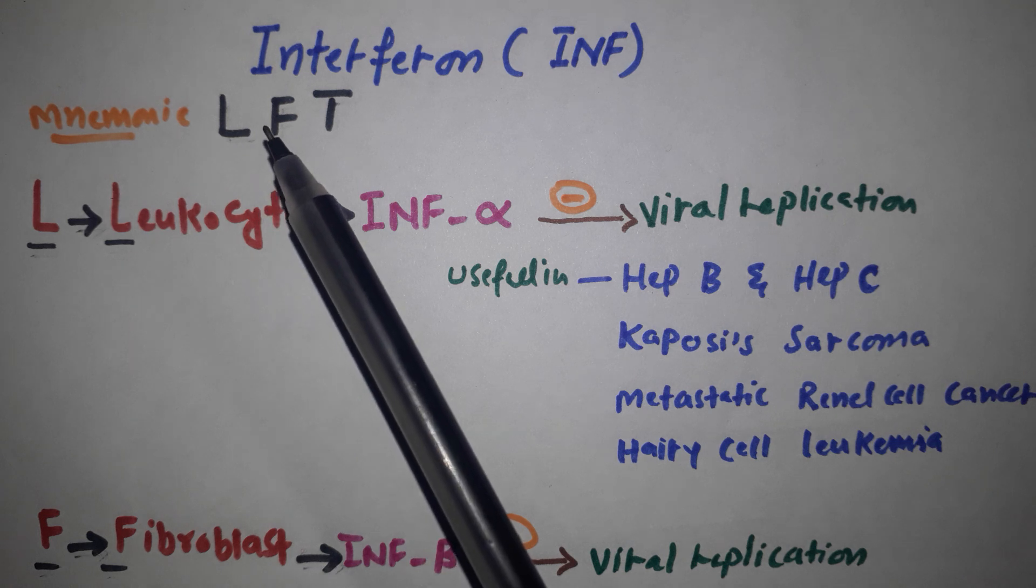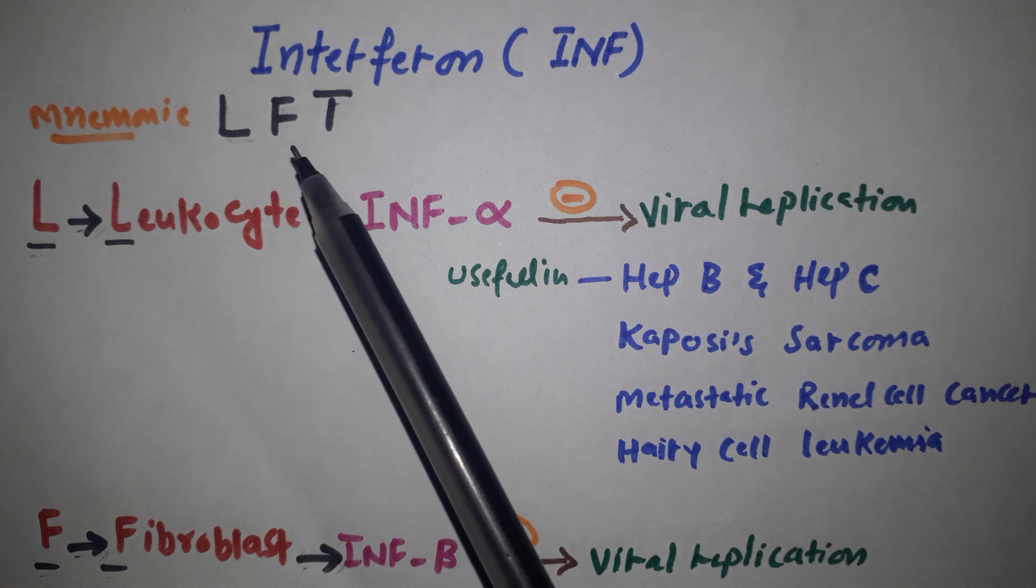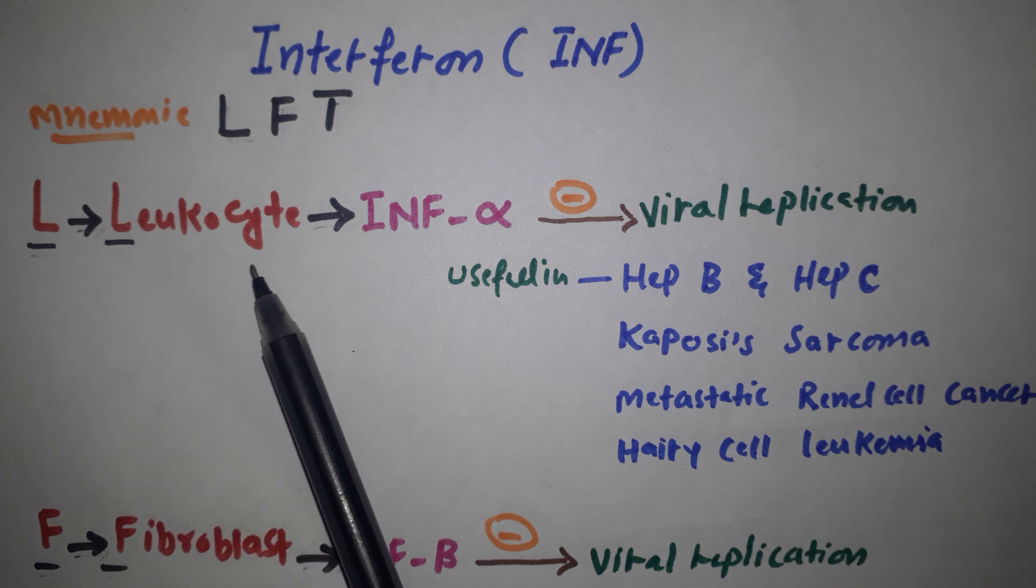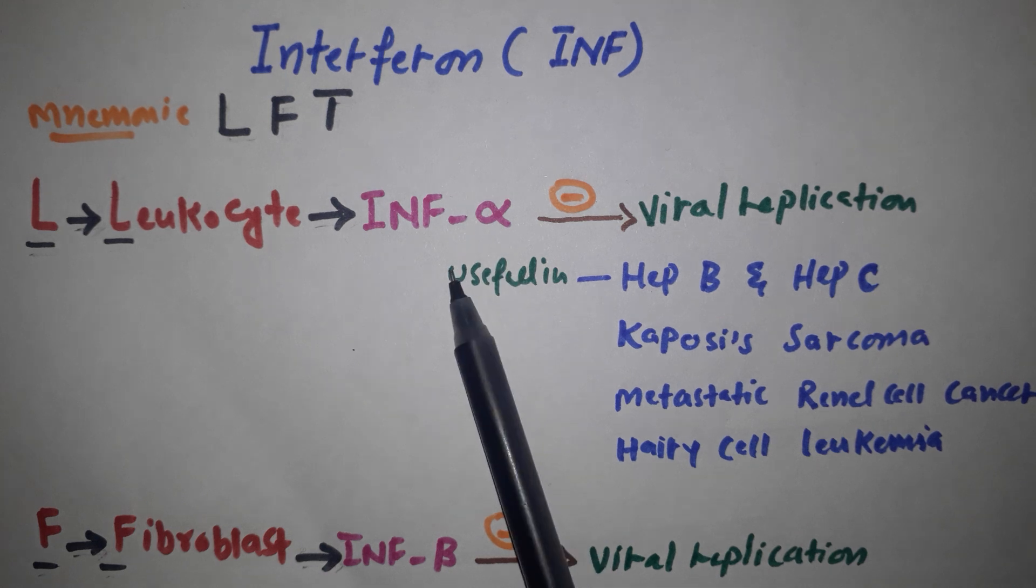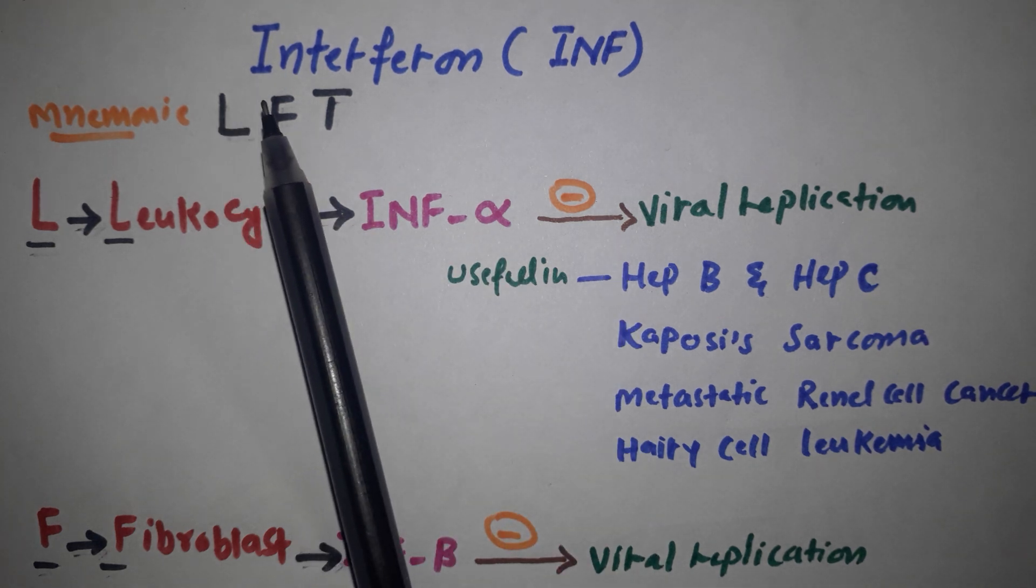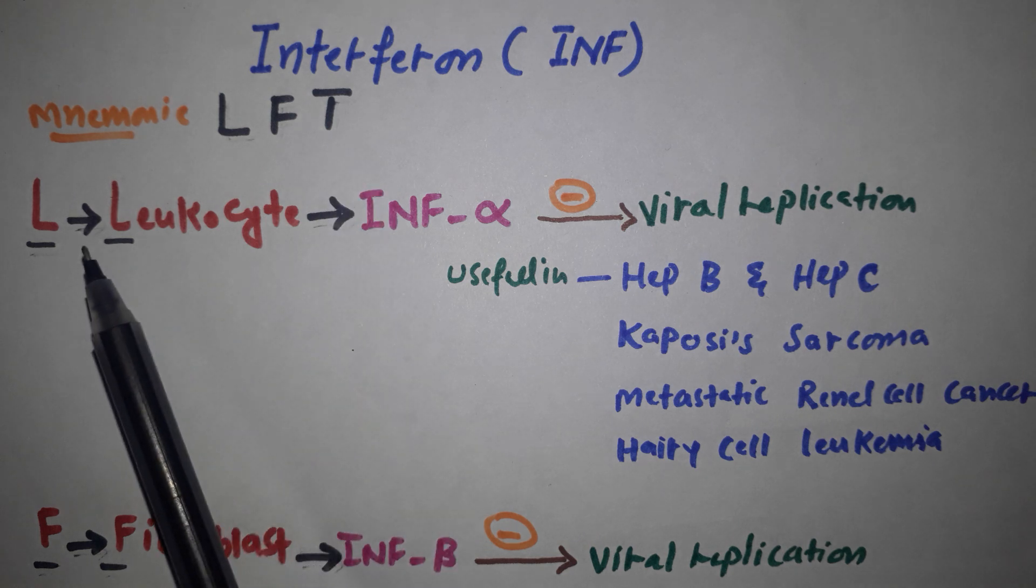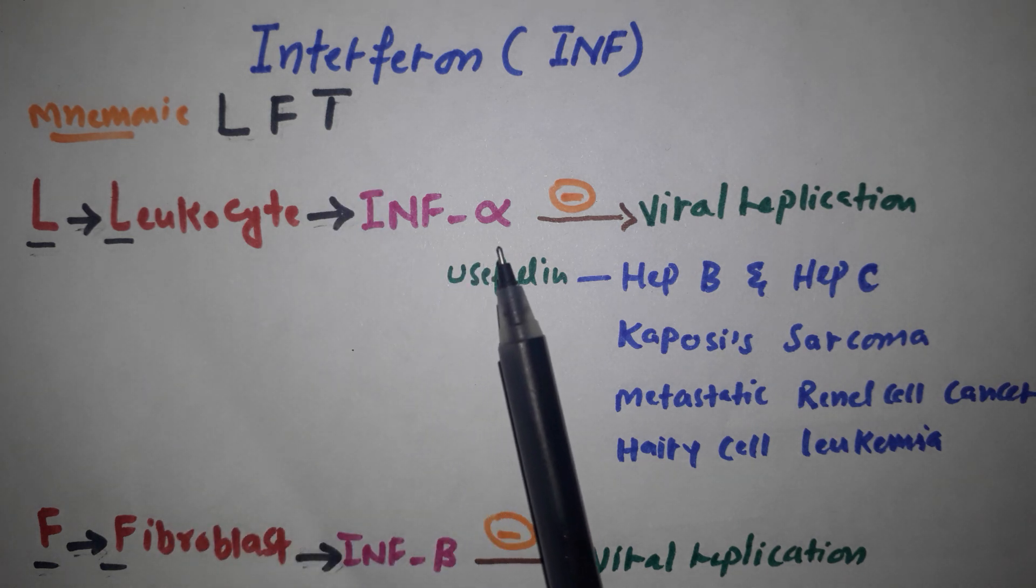The mnemonic here is LFT, like liver function test. L is for leukocytes, which secrete interferon alpha. F secretes interferon beta, and T secretes interferon gamma. So L is for leukocytes secreting interferon alpha.